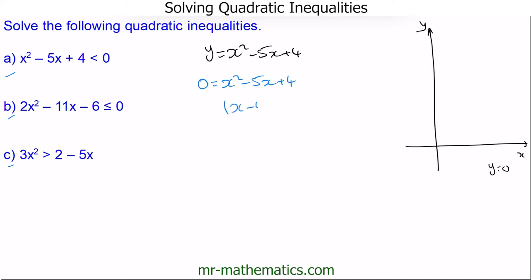We can write this as (x minus 4)(x minus 1), because negative 1 multiplied by negative 4 gives positive 4, and negative 4 added to negative 1 gives negative 5x. Our solutions are when each bracket equals 0: x minus 4 equals 0 gives x equals 4, and x minus 1 equals 0 gives x equals 1. These two values are our roots, which we can plot at x equals 1 and x equals 4.